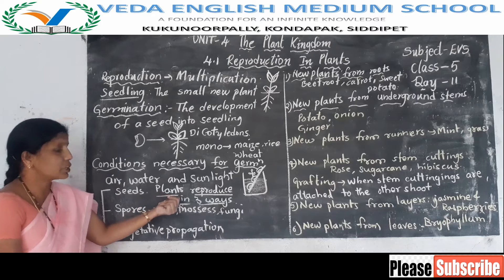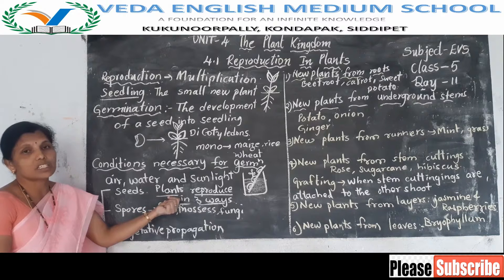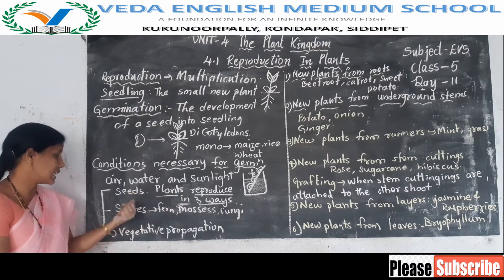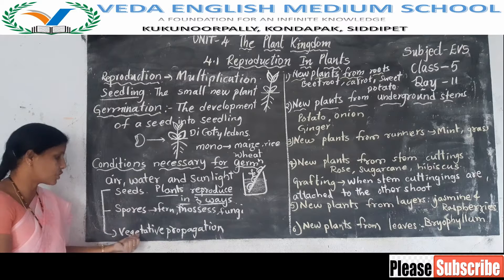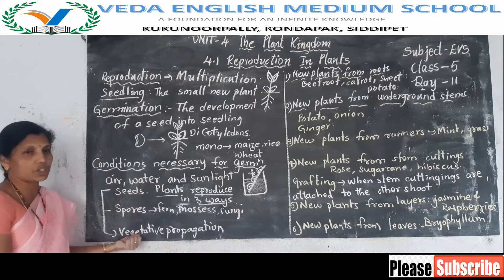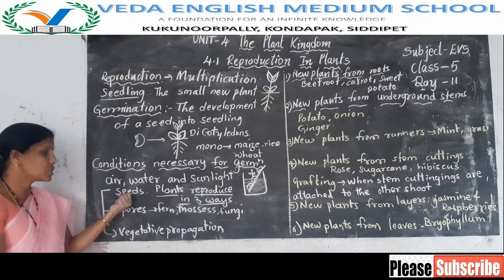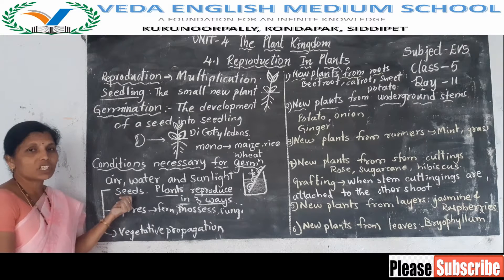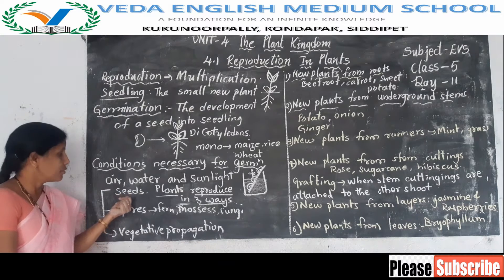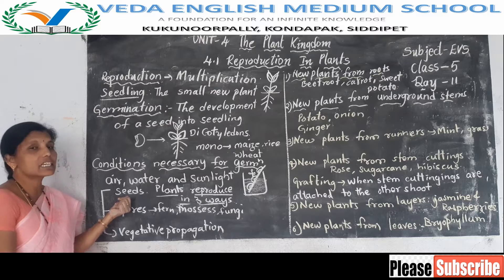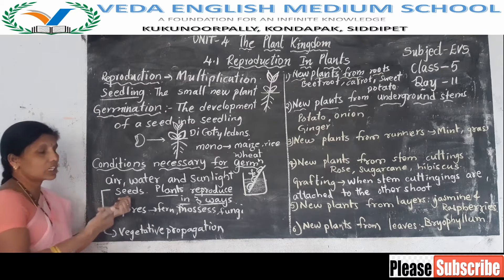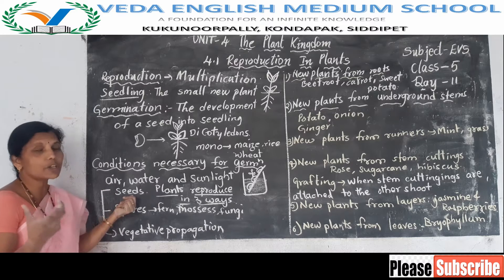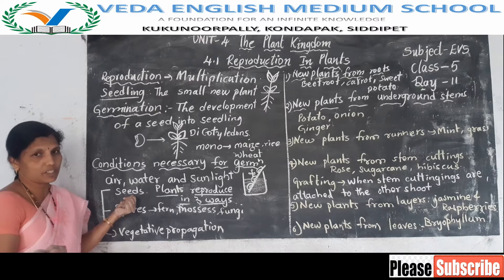Plants reproduce in three ways: seeds, spores, and vegetative propagation. If you sow seeds in soil and they get sufficient air, water, and sunlight, they grow into a new baby plant.